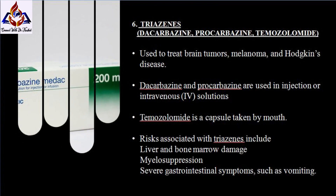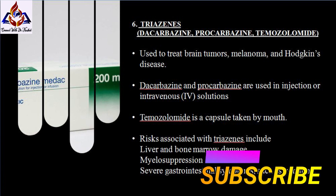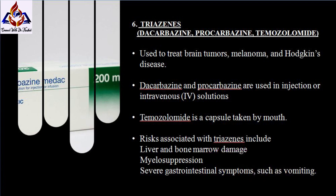Sixth, triazines — drugs are dacarbazine, procarbazine, and temozolomide. Triazines are used to treat a variety of cancers including brain tumors, melanoma, and Hodgkin's disease. While dacarbazine and procarbazine are given as injections or intravenous solutions, temozolomide is a capsule taken by mouth. Risks associated with triazines include liver and bone marrow damage, myelosuppression, and severe gastrointestinal upset such as vomiting.